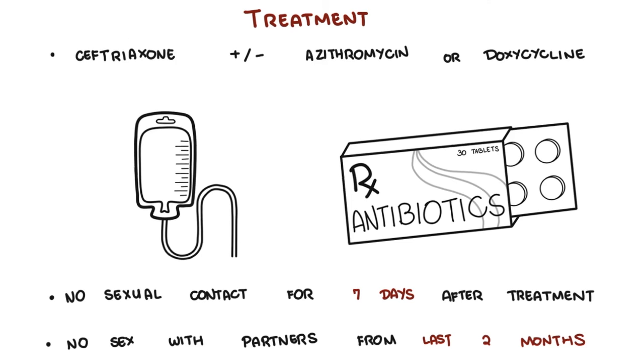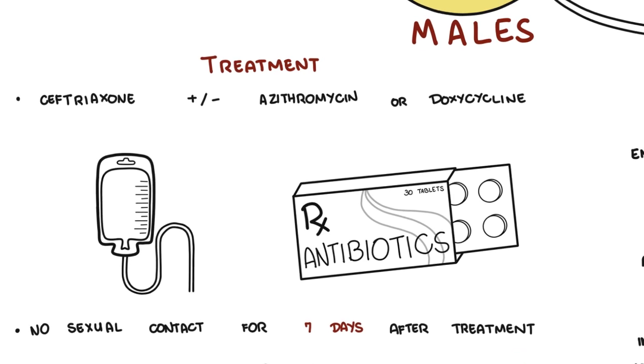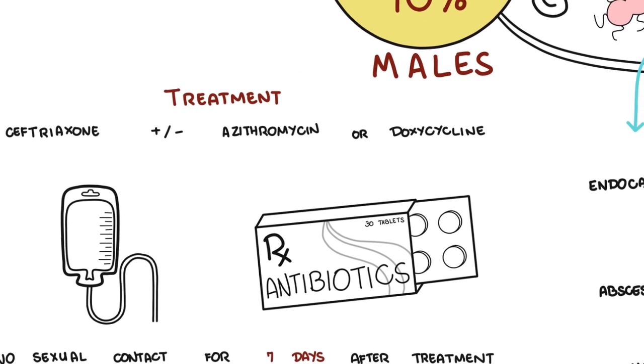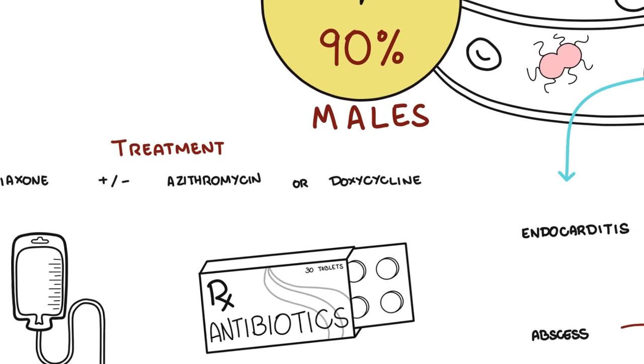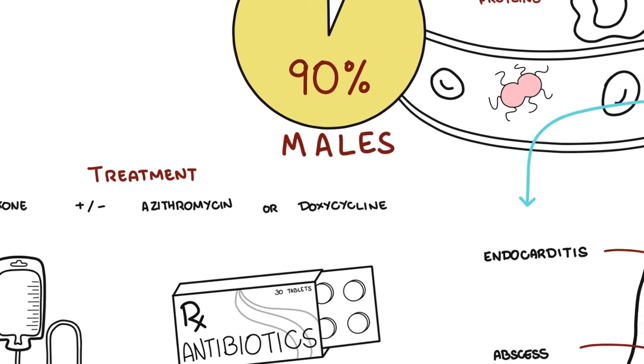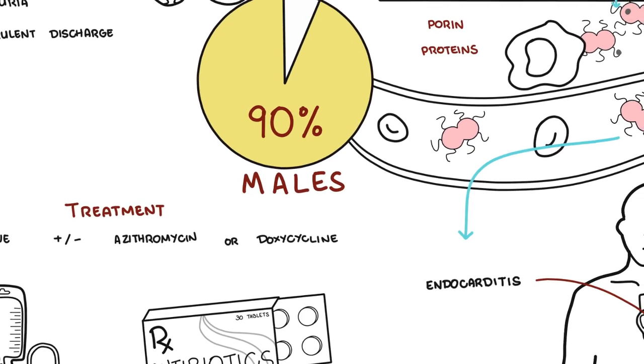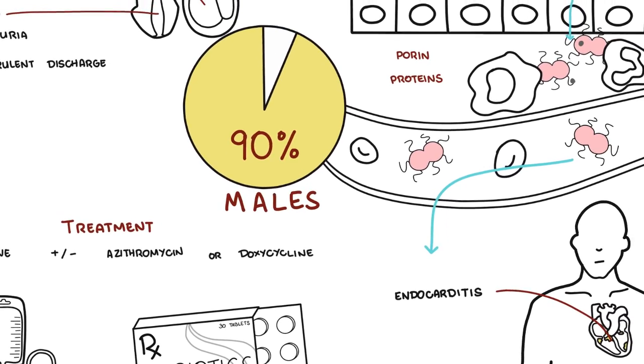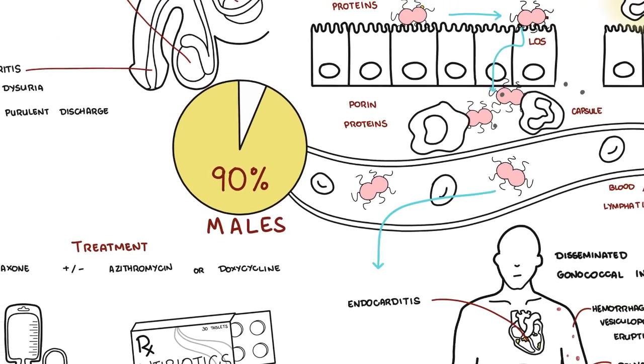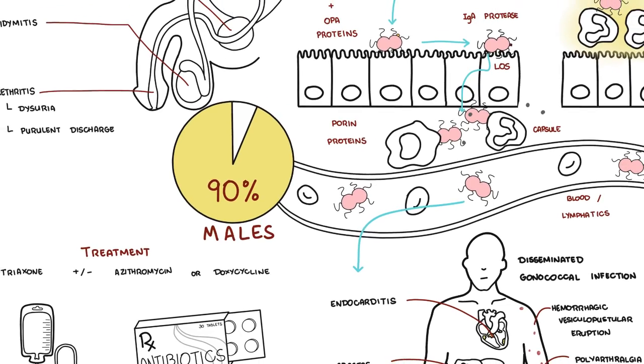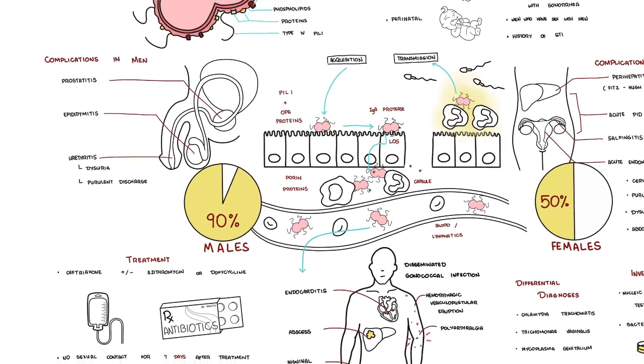So in summary, Neisseria gonorrhea is a gram-negative diplococci, which causes gonorrhea, a sexually transmitted infection that is common. Neisseria gonorrhea have many virulent factors, including lipooligosaccharides, IgA proteases, and a capsule. They're able to evade the immune system and cause infection locally in the urogenital tract, or they can disseminate to the liver or to the joint, as well as causing disseminated gonococcal infection with the classic triad we talked about.